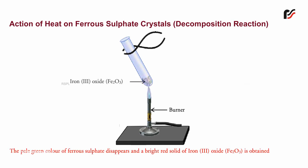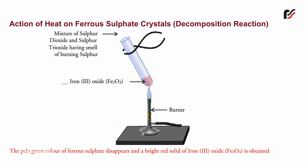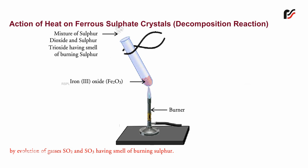The pale green colour of ferrous sulphate disappears and a bright red solid of iron oxide is obtained. By evolution of gases — sulphur dioxide and sulphur trioxide — having the smell of burning sulphur. The chemical reactions involved are as shown.